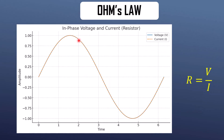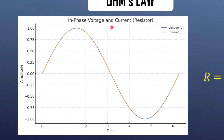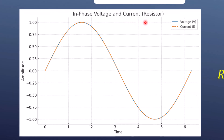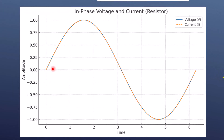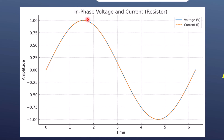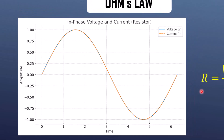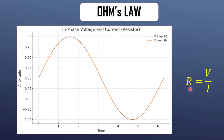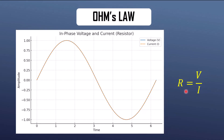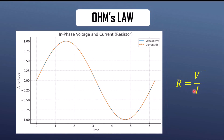Here we can see the graph of voltage and current when current flows through a resistor. You can see that the voltage and the current are completely in phase with each other — there is no phase difference. The formula of resistance is governed by Ohm's law, which is R equals V over I. So you can compute the value of resistance if you have the values of voltage and current.